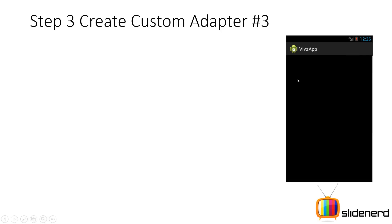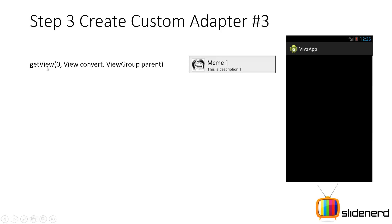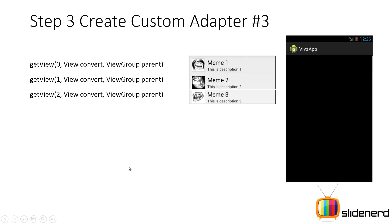Let's discuss how the custom adapter works. Starting with an empty list view, when the first row is to be shown, getView is called — it creates that row. For the second row, getView is called again, and so on. The first parameter is the position (0, 1, 2...). The second parameter, convertView, relates to object recycling for performance optimization — we'll cover that later. The third parameter, ViewGroup parent, is a reference to the list view.